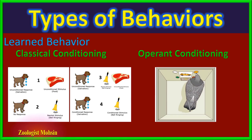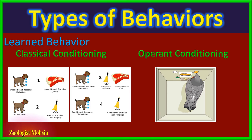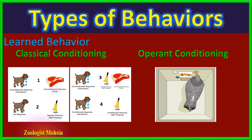Operant conditioning is based on reward and punishment. For example, a pigeon is put into a box with several lighted buttons. When the pigeon strikes the yellow button, it receives food in the tray; when it strikes the red button, it receives a vibration or little shock. After repeating this many times, the pigeon learns what is good and what is bad. Such conditioning is termed operant conditioning.